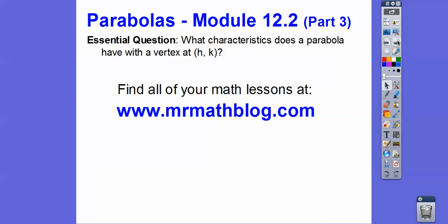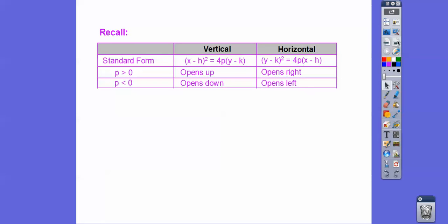So what characteristics does a parabola have with vertex h,k? We did this in the last lesson. Vertical parabolas are when x is being squared, horizontals are when y is being squared. h always hangs out with x and k always hangs out with y — hk is in alphabetical order, so is xy. If p is positive, it opens up or to the right; when it's negative, it goes down or to the left.